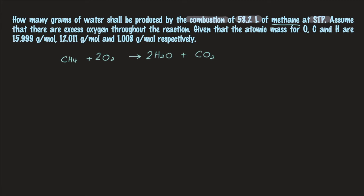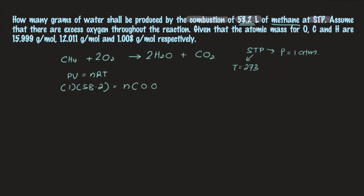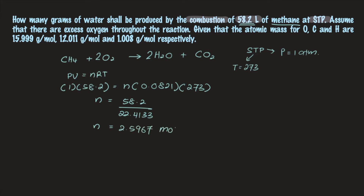The reaction occurs at STP: standard temperature 273 K and standard pressure 1 atm. We are given the volume of methane, so we can use PV = nRT to find the number of moles of methane. With P = 1 atm, V = 58.2 litres, R = 0.0821, and T = 273, we get n = 58.2 divided by 22.4133, hence n = 2.5967 mol of methane.